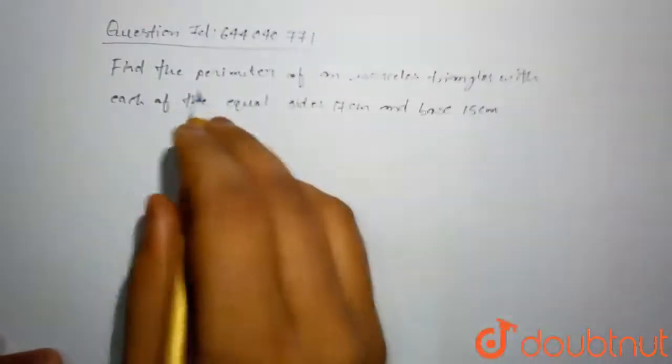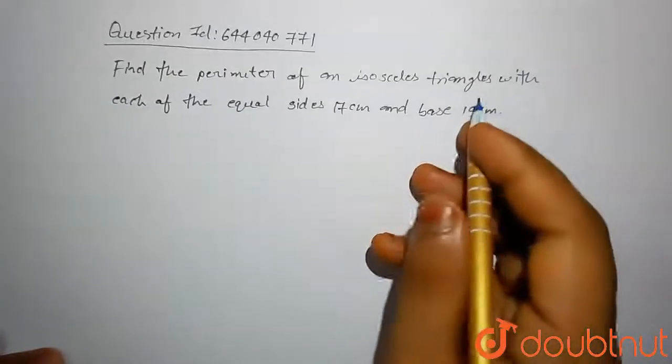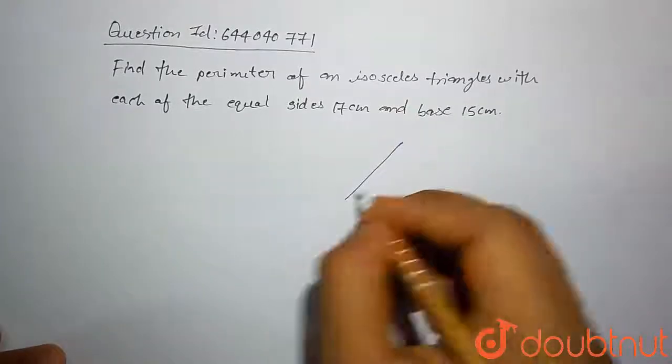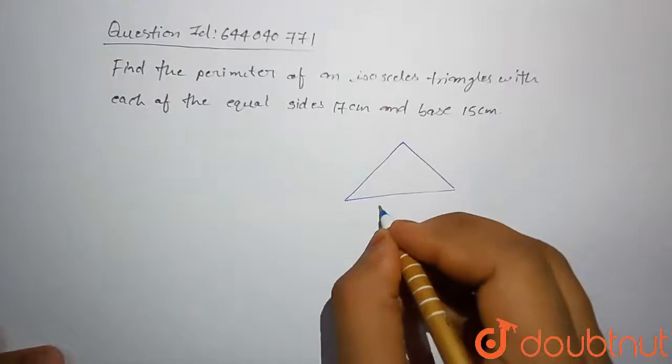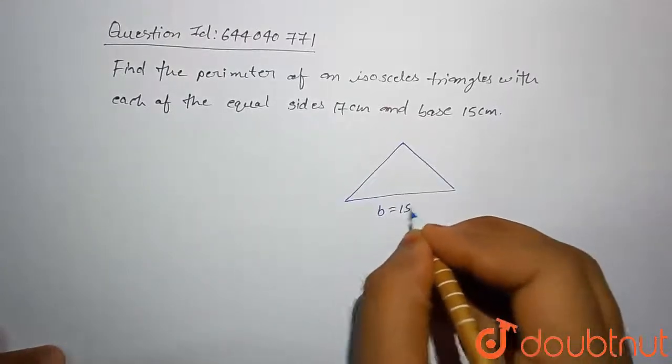We have to find perimeter of the isosceles triangle. Then this is isosceles triangle. This is base which is given 15 centimeter.